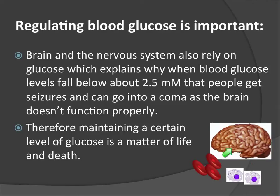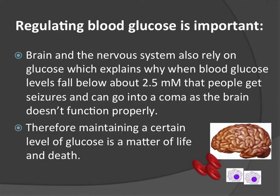Because the brain is so dependent upon glucose, if blood glucose levels fall below about two and a half millimolar — remember the normal levels are between four and seven — you actually start having seizures and can go into a coma. You may have heard about people going into diabetic comas. Basically your brain stops functioning. It really is a matter of life and death: if you do not get your glucose levels back up, your brain stops telling your body to breathe, stops telling your heart to beat, and you can die.